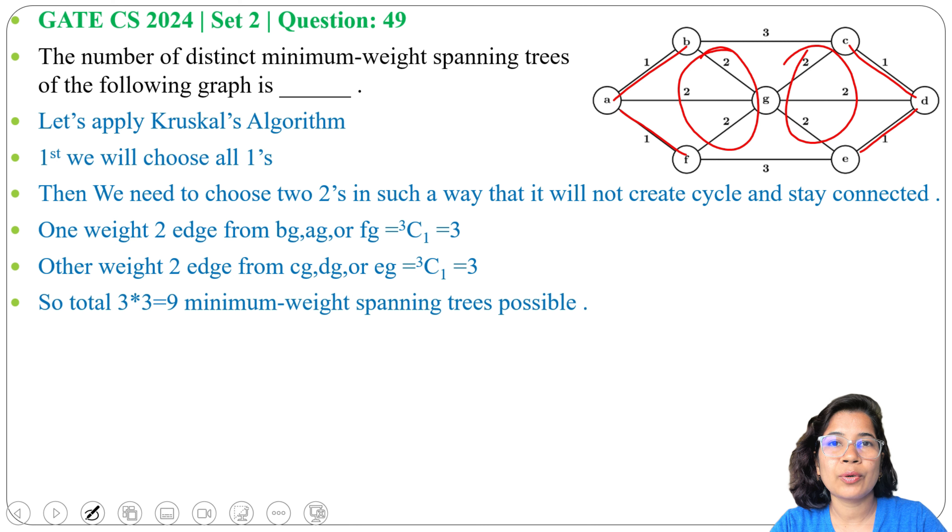In a minimum spanning tree there will be 6 edges, and we already chose 4 edges with weight 1. Next we need to choose 2 more edges.